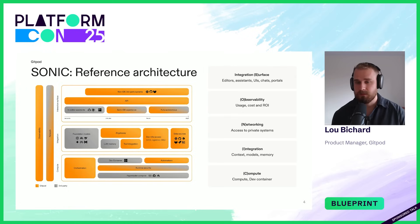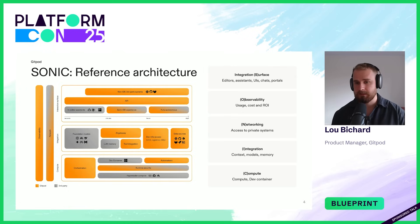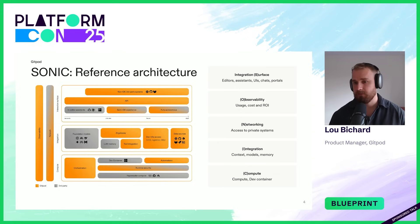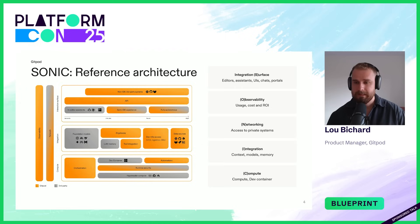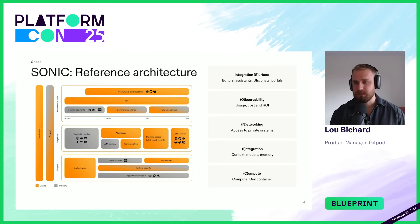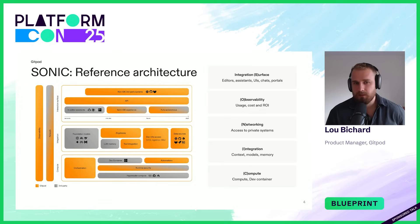In addition to that, we need observability — understanding usage, cost, and the ROI of the tools we're investing in. Networking: where are those LLMs and models actually deployed and what do they have access to within our network? Integration for things like context, memory, and long-term memory for agents. And then compute: where do those agents and models actually run? I'm going to deep dive into a few of these areas, as the full picture will depend on your individual company and architecture.